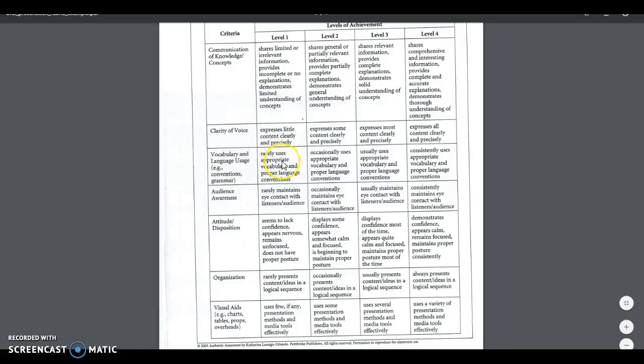Looking at vocabulary, rarely uses appropriate vocabulary and proper language conventions, occasionally uses appropriate vocabulary, usually, consistently. I feel like that's a nice way to do it. And again, although there's a lot of criteria, I think this is a little more reliable than the first one. Looking down at visual aids. Few versus some versus several versus a variety of presentation methods. I think if you and I, even without norming, we would be able to be a little more consistent on knowing if it's a variety, maybe not, or several or some. It's just an idea to really think about those words that we're using.